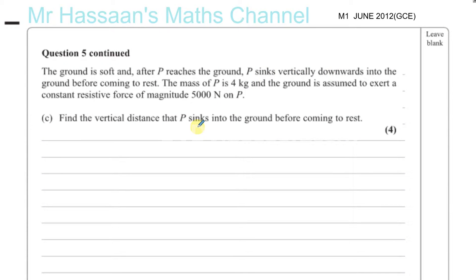Okay, so question 5, part C. The ground is soft, and after P reaches the ground, P sinks vertically downwards into the ground before coming to rest. The mass of P is 4 kilograms, and the ground is assumed to exert a constant resistive force of magnitude 5,000 newtons on P.